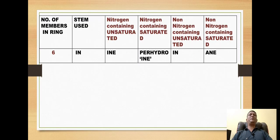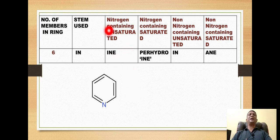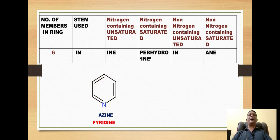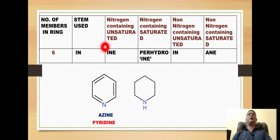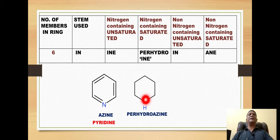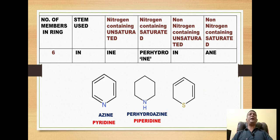For six-membered rings, we use the stem 'in'. For a nitrogen-containing, completely unsaturated six-membered ring, we use the suffix 'ine', giving 'azine', which is commonly called pyridine. For a completely saturated six-membered nitrogen ring, we use the prefix 'perhydro' followed by the name of the unsaturated ring, giving 'perhydroazine', commonly referred to as piperidine. For non-nitrogen unsaturated six-membered rings, we also use the suffix 'ine' — for a sulfur ring, the name is 'thiine'.